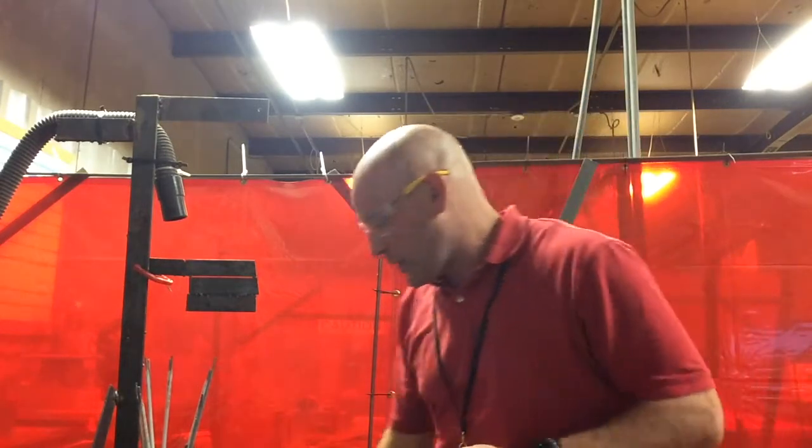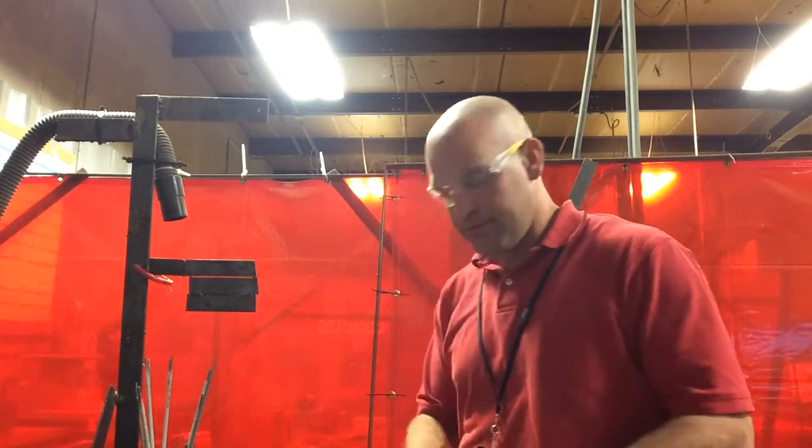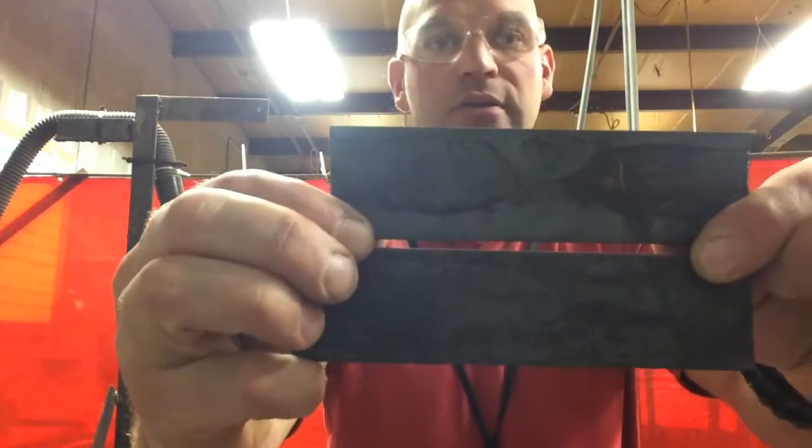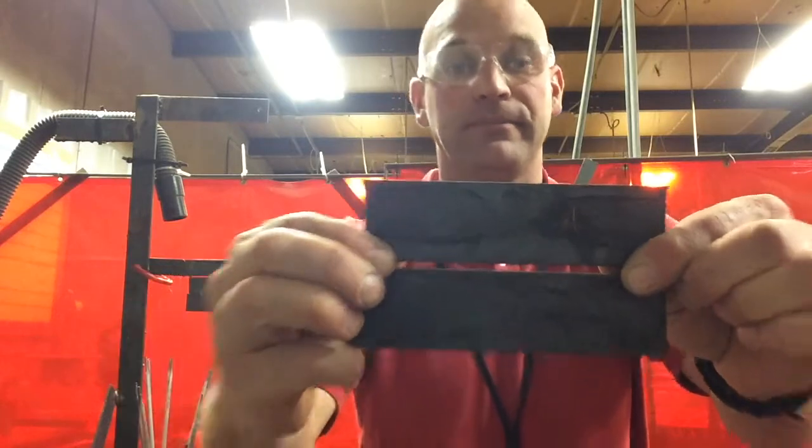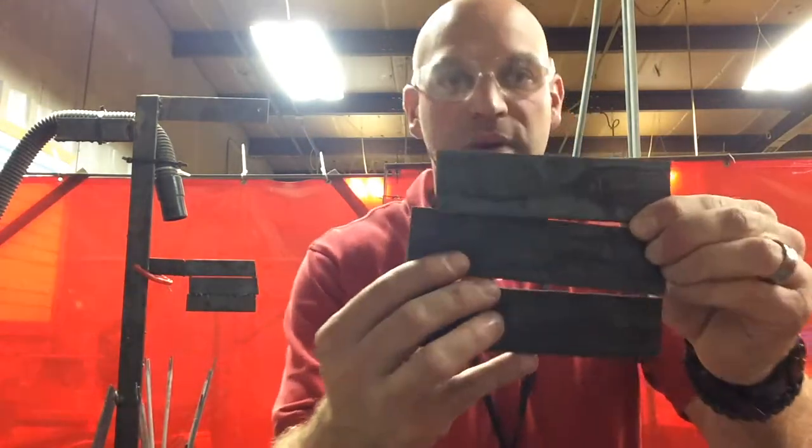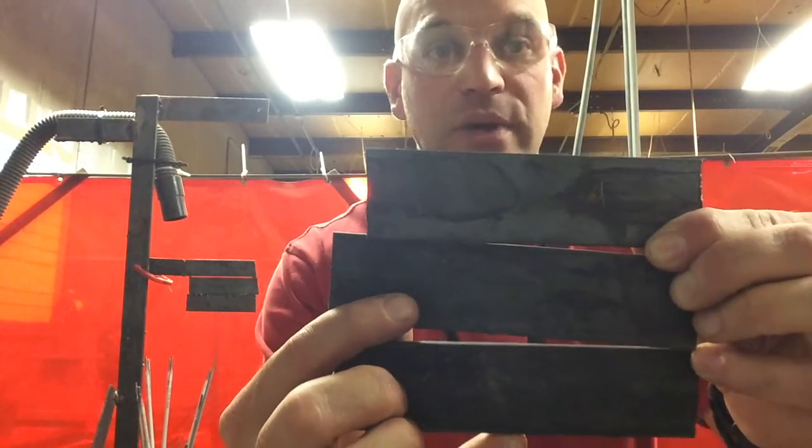Hey folks, real quick video with a quick tip for you when you're doing the keyhole weld. What we have here is a weld that you're going to tack together and leave a 3/32 inch gap. You're going to tack three pieces together, leaving a 3/32 inch gap between each piece.